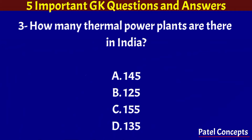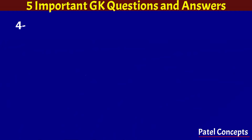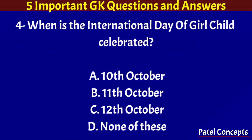How many thermal power plants are there in India? 135. When is the International Day of Girl Child celebrated? 11th of October.